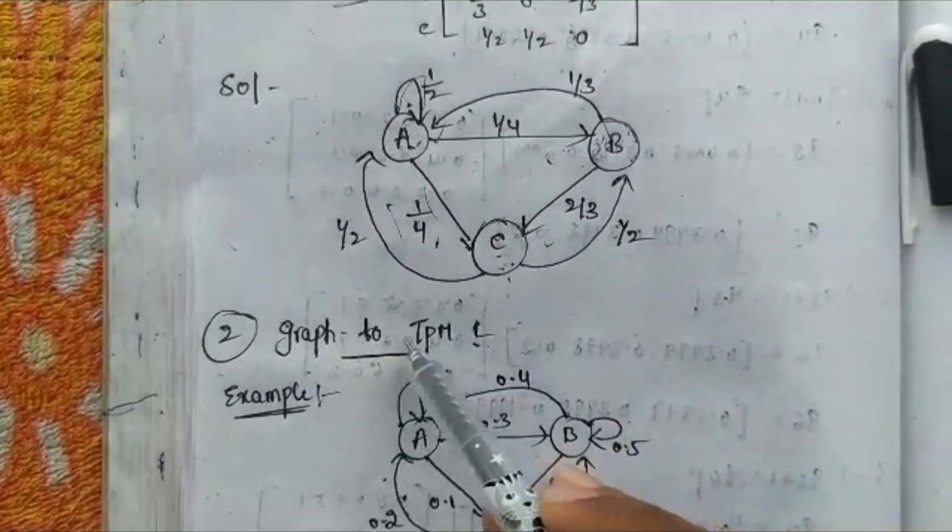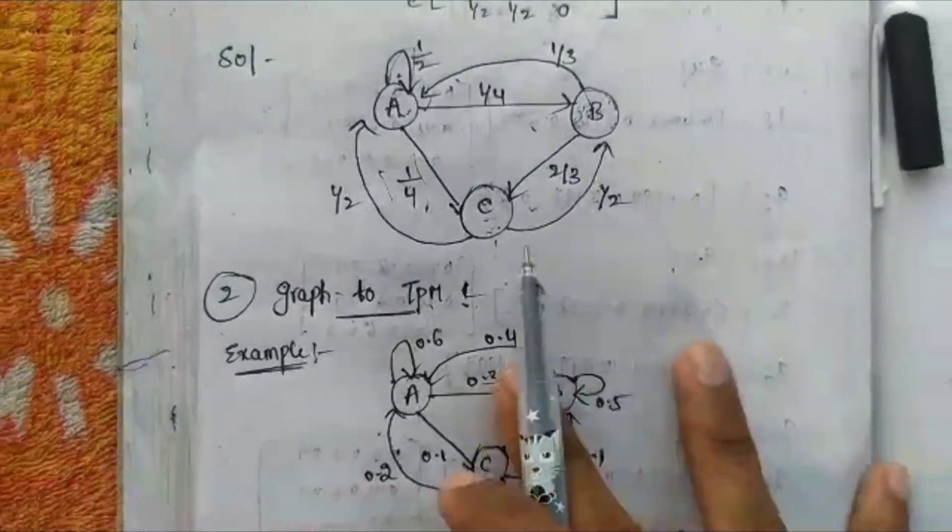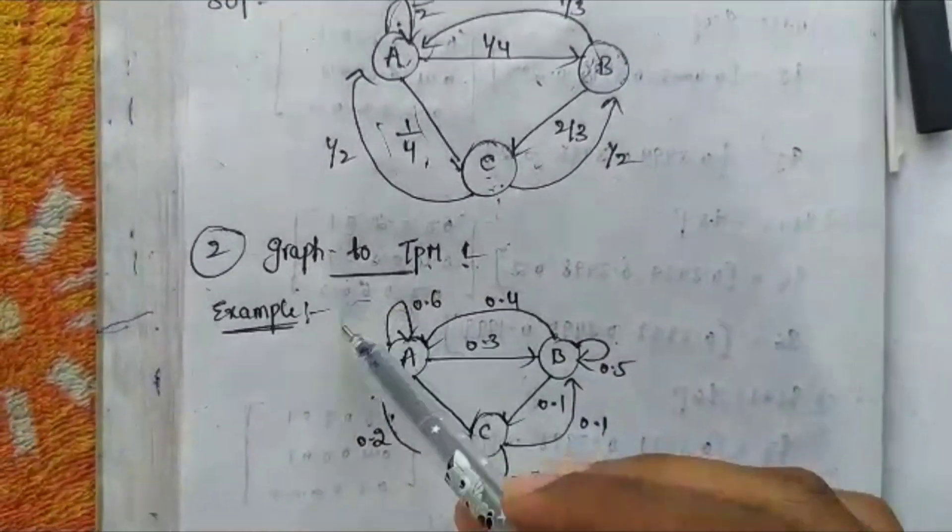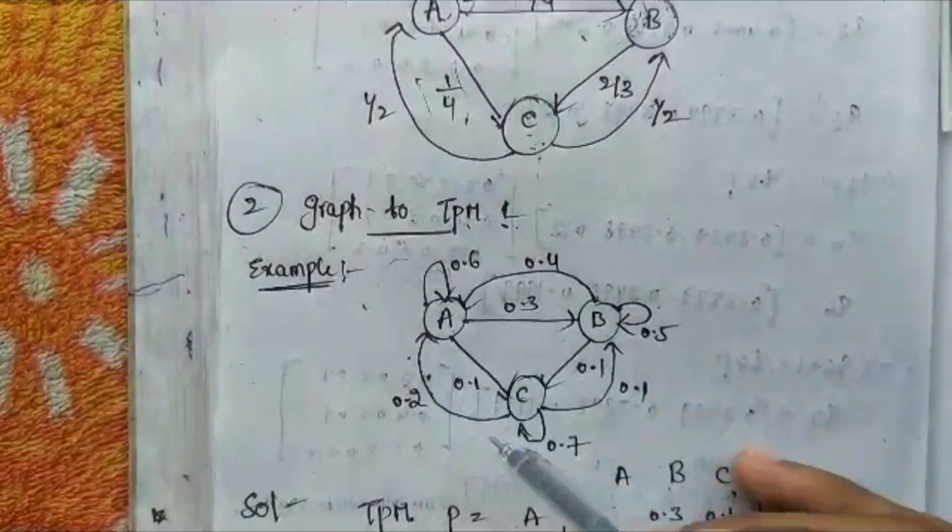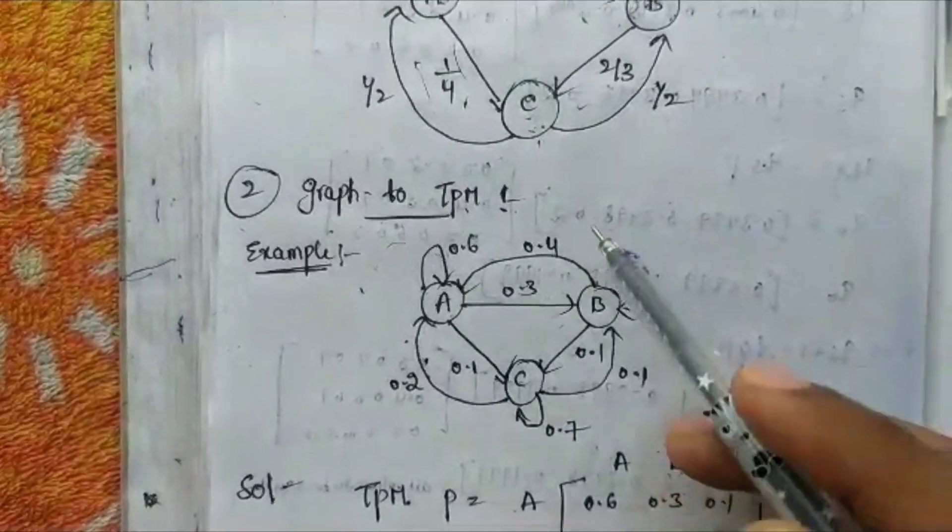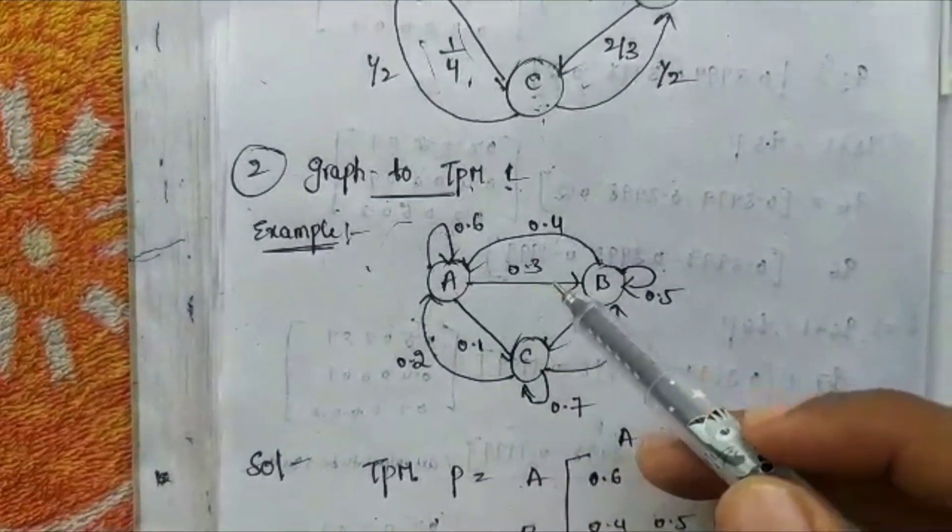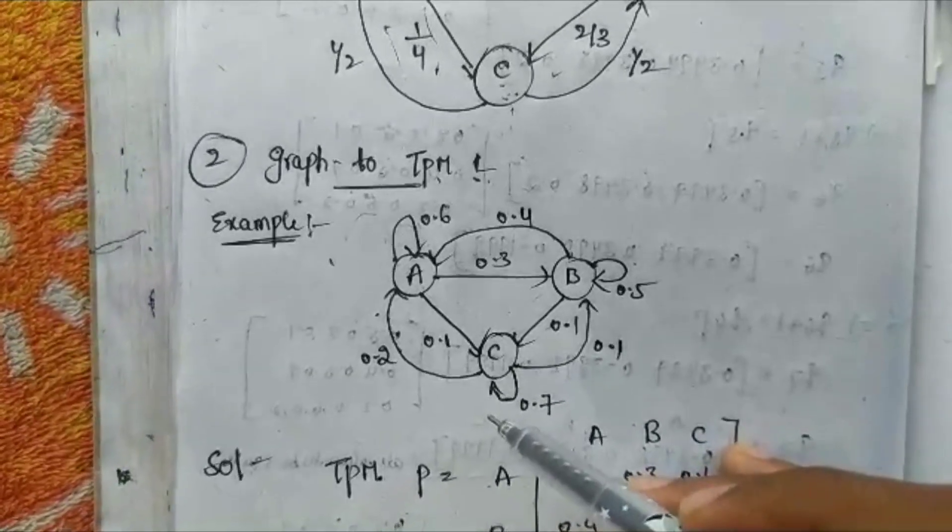For the second method, we have a graphical representation and we need to convert it into a transition probability matrix. Let's take an example of a graph diagram.